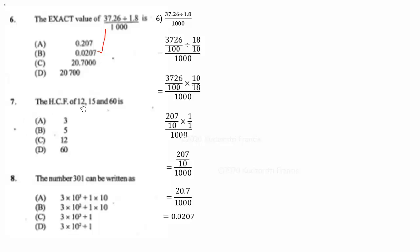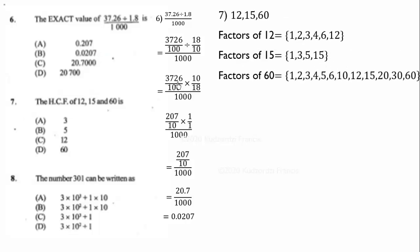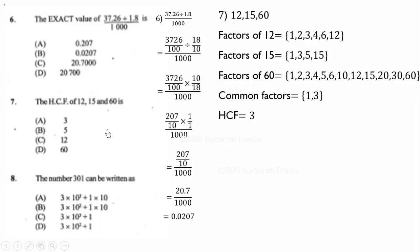We want to find the highest common factor of 12, 15, and 60. The factors of 12 are 1, 2, 3, 4, 6, and 12. The factors of 15 are 1, 3, 5, and 15. The factors of 60 are 1, 2, 3, 4, 5, 6, 10, 12, 15, 20, 30, and 60. The common factors appearing in all three lists are 1 and 3. The highest of these common factors is 3. Therefore the correct answer is A.